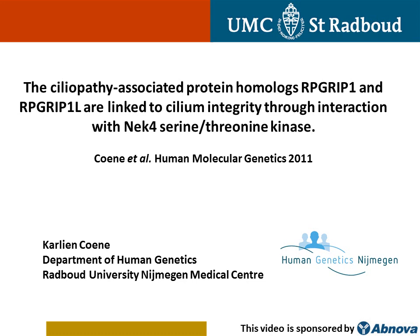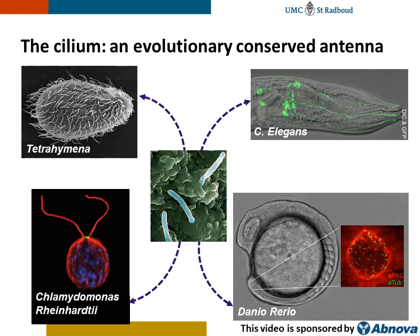This presentation will summarize the identification of the NEC4 serine-threonine kinase as a ciliary protein that interacts with the homologs ARPA-GRIP-1 and ARPA-GRIP-1-like protein.